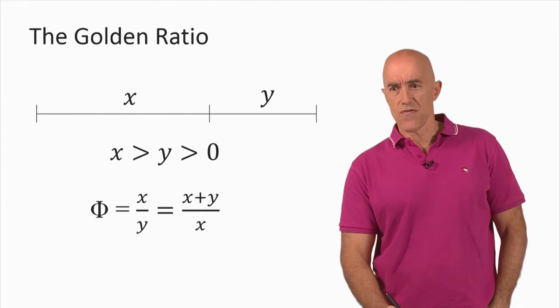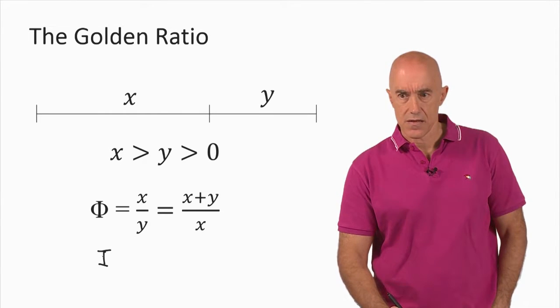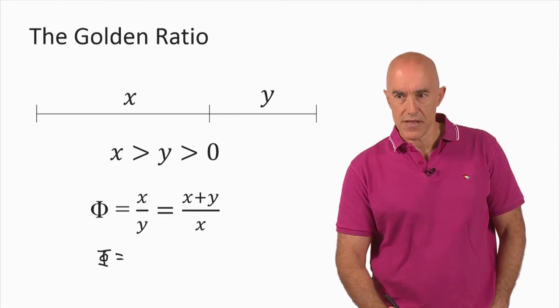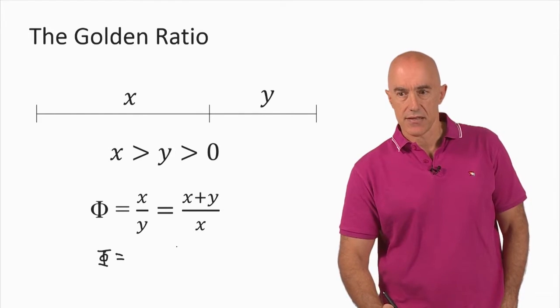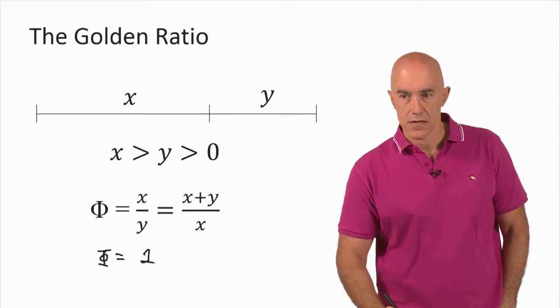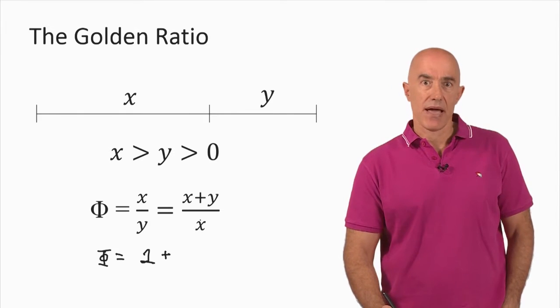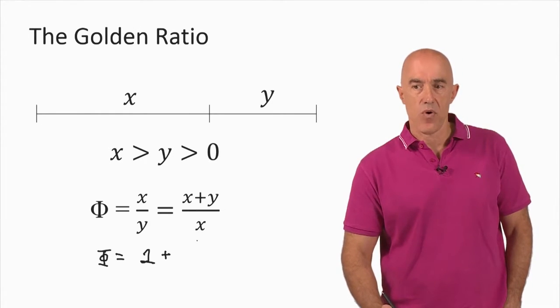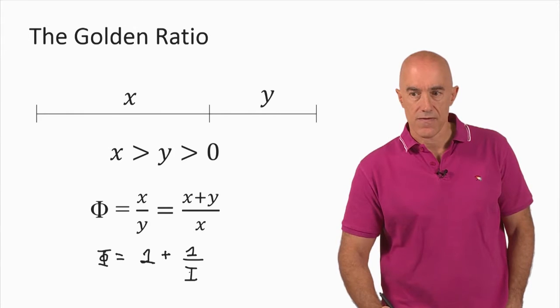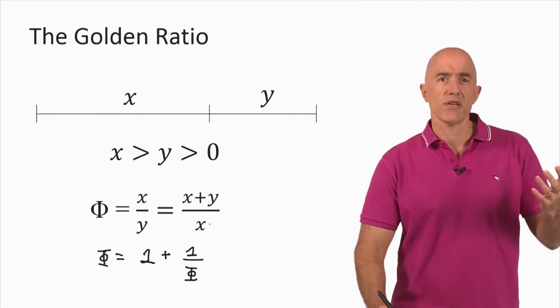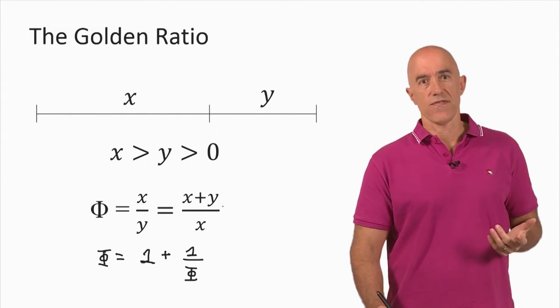So X over Y is Phi. And then we can manipulate X plus Y over X. So we can divide X by X, which is one, and then we can divide Y by X. Well, Y divided by X is just the reciprocal of X divided by Y. So Y divided by X is one over Phi. So the golden ratio satisfies the equation Phi equals one plus one over Phi.